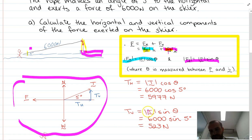But a little bit of that power, tension times sine theta, so 6000 newtons times sine theta, is 523 newtons. That's being used to pull the skier up, lifting the skier up a little bit. So 523 newtons in the upwards direction, 5977 newtons in the horizontal direction.